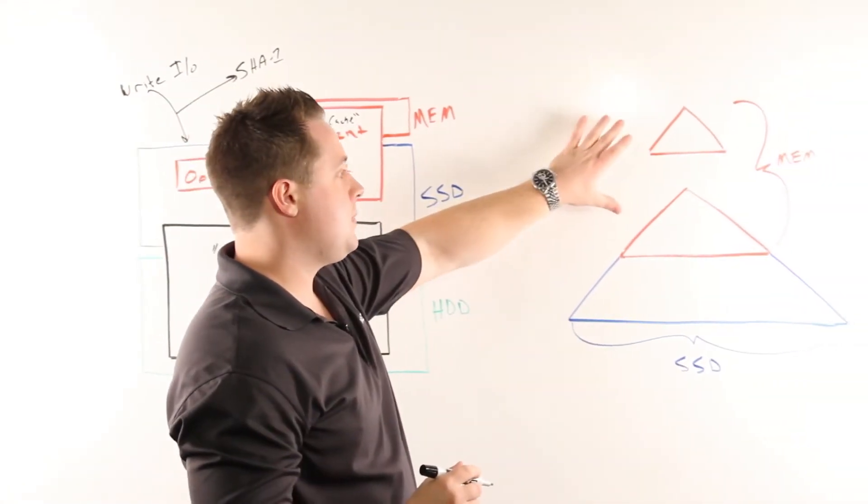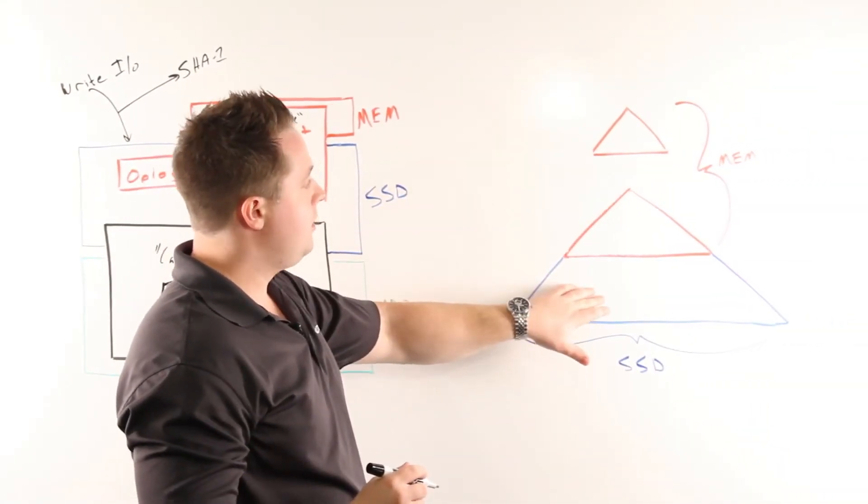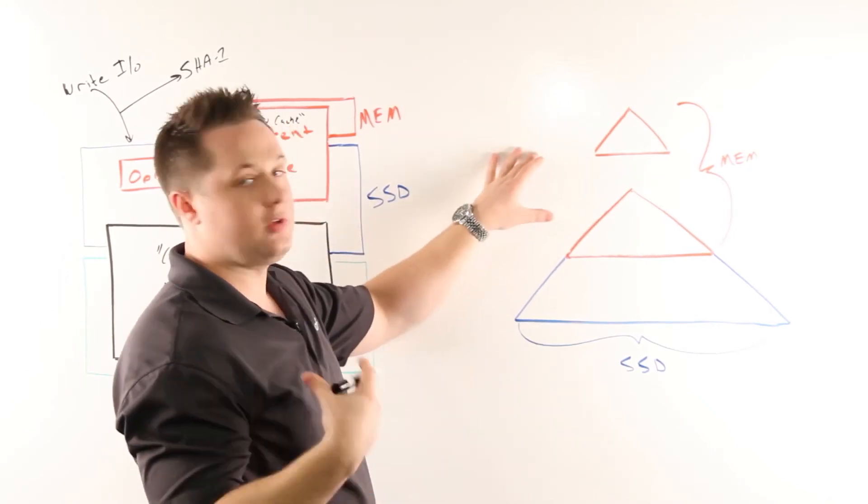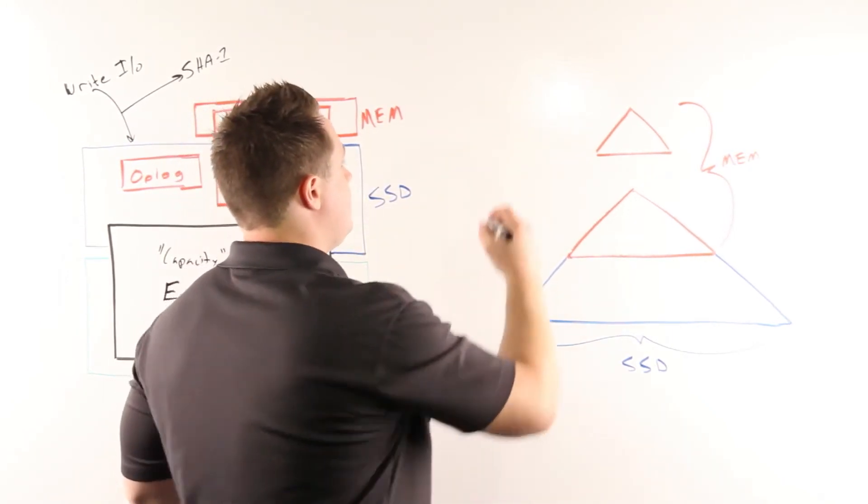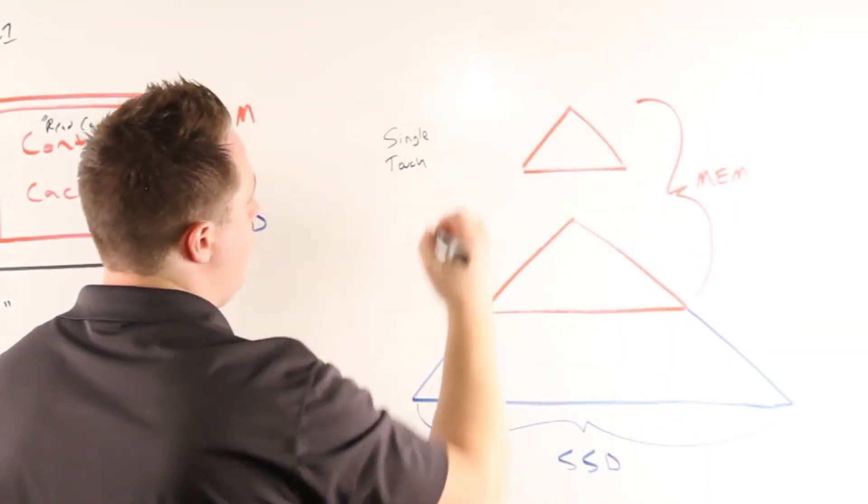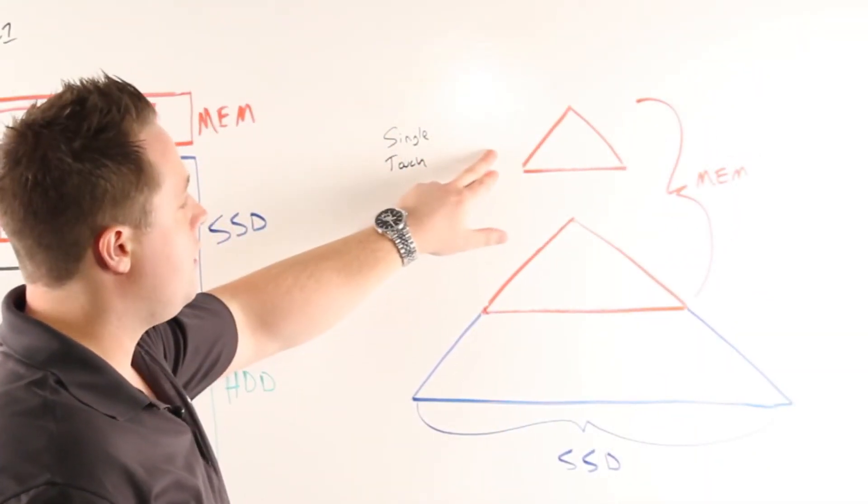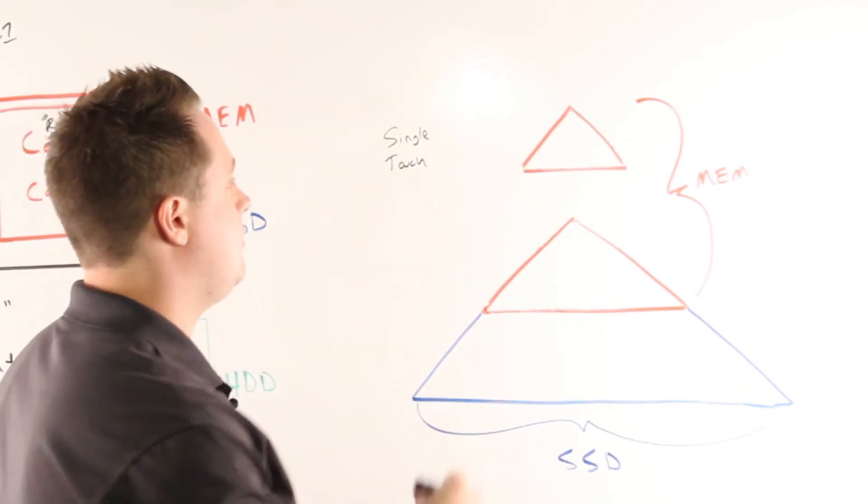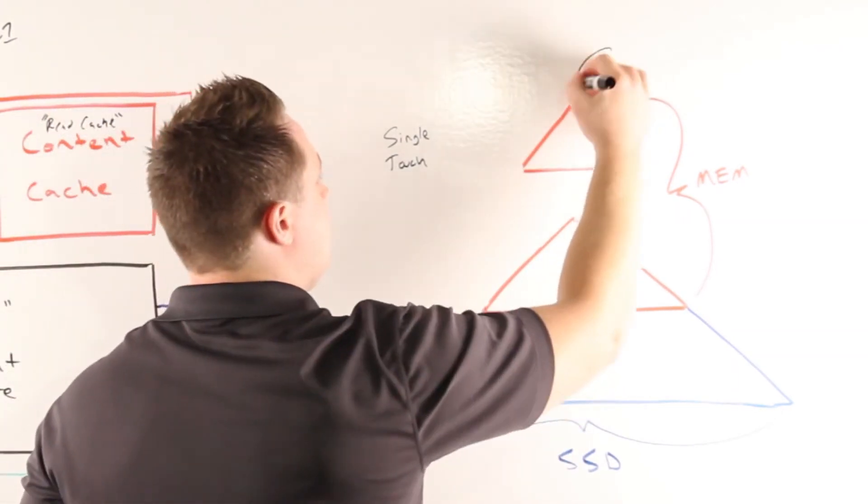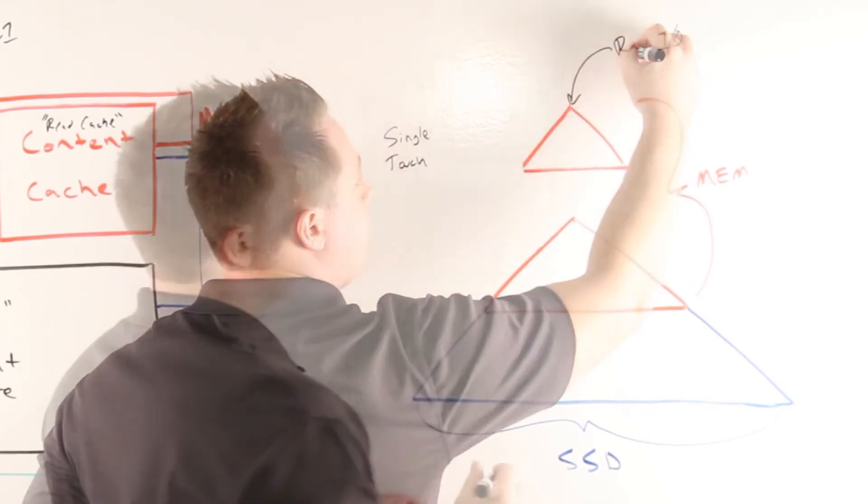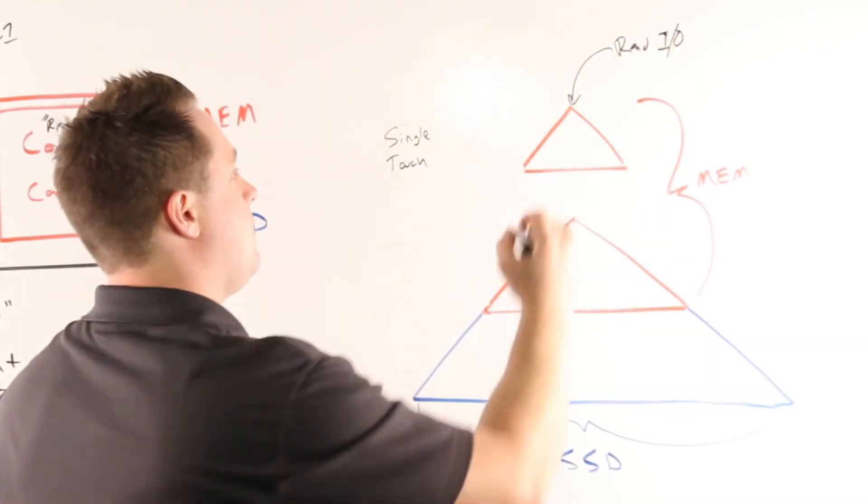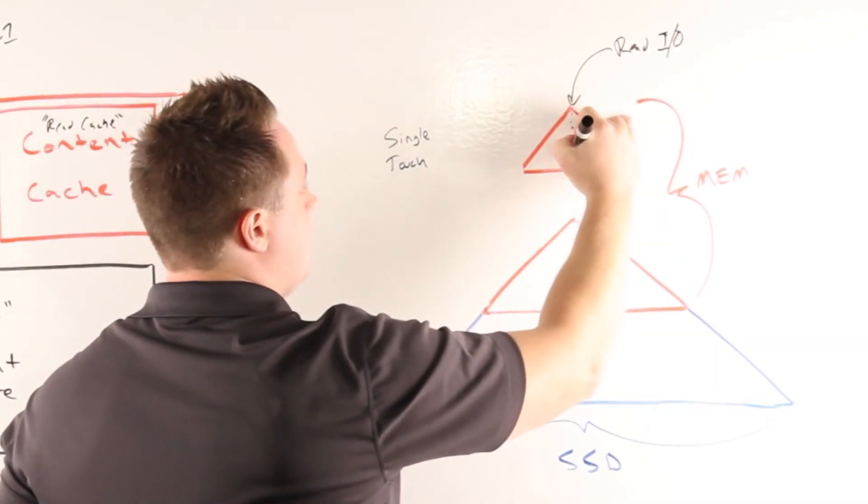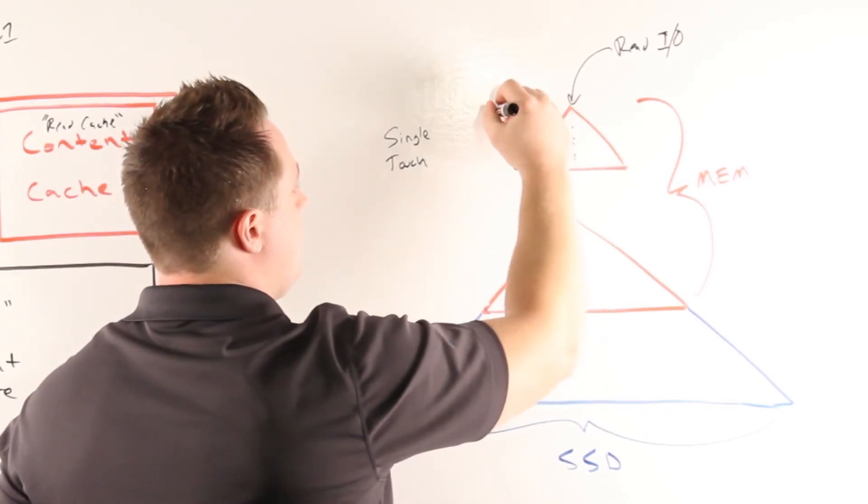The content cache spans both memory and SSD and is broken down into a multi-pool structure. The first piece is what we call the single-touch pool, which is a very small portion of the content cache that's solely in memory. Upon any read request, that data is put into the single-touch pool. If the data is never read again, it will follow an LRU cycle and eventually become evicted.